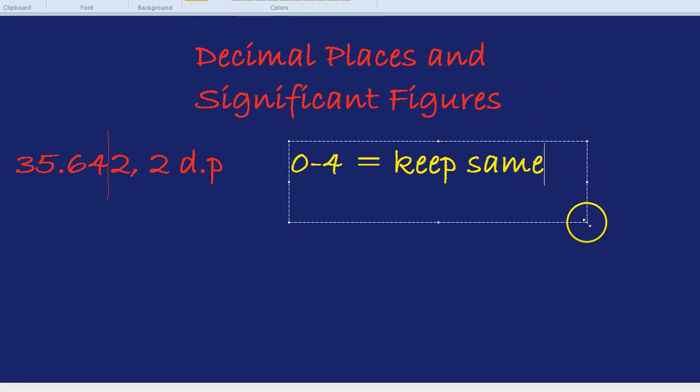If, however, the number, the one number just to the right of that line is between 5 and 9, what you do is the number to the left, in this case that 4, would go up by 1.